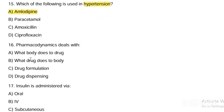Next question. Pharmacodynamics deals with: Option A, what the body does to the drug. Option B, what the drug does to the body. Option C, drug formulation. Option D, drug dispensing dynamics. Answer is Option B — pharmacodynamics is what the drug does to the body.